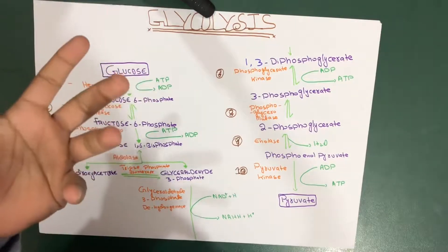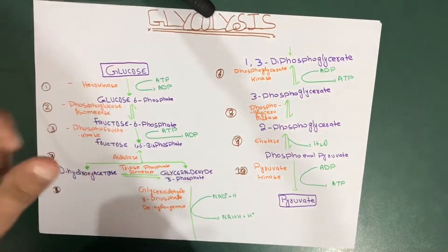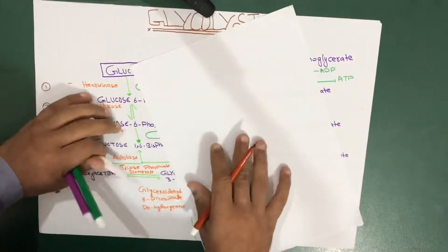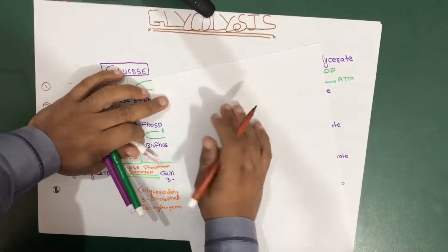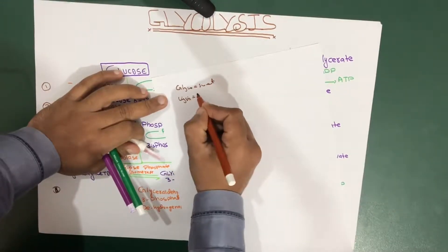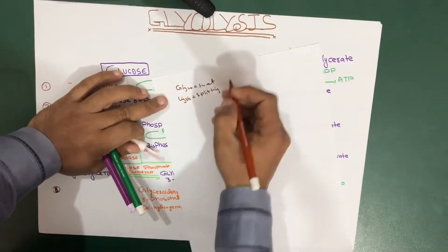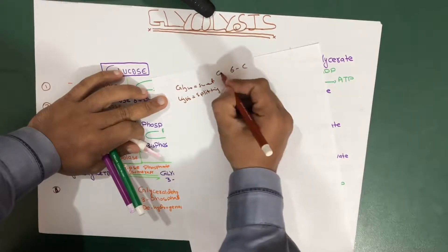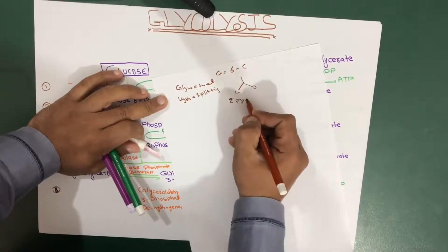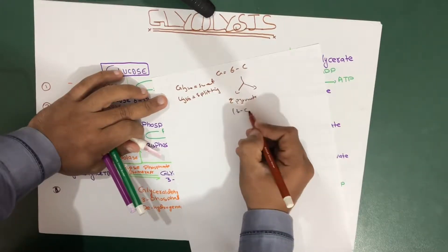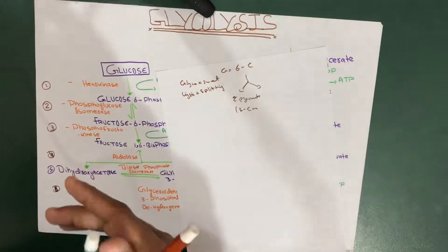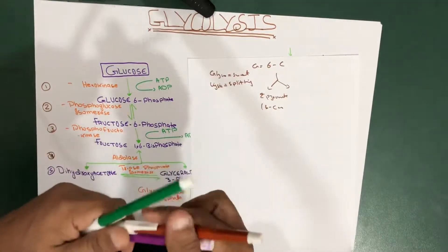To cover the basics: glycolysis is actually just a Greek word. 'Glyco' means sweet and 'lysis' means splitting. So we are splitting glucose, which is a six-carbon molecule, and breaking it down to two molecules of pyruvate, each containing three carbons. We do this using 10 step reactions, meaning we use 10 enzymes.